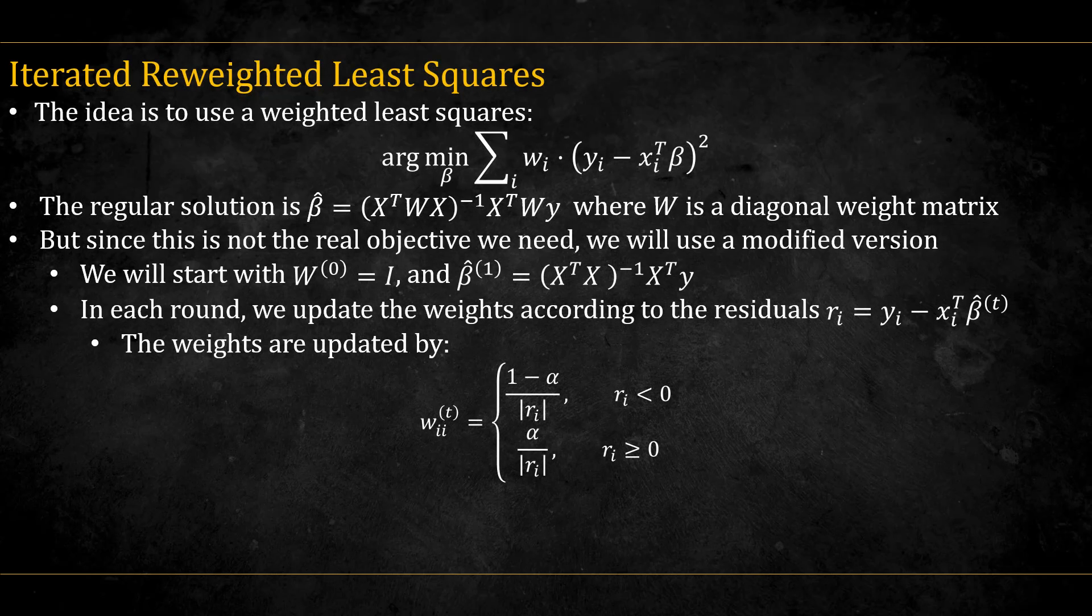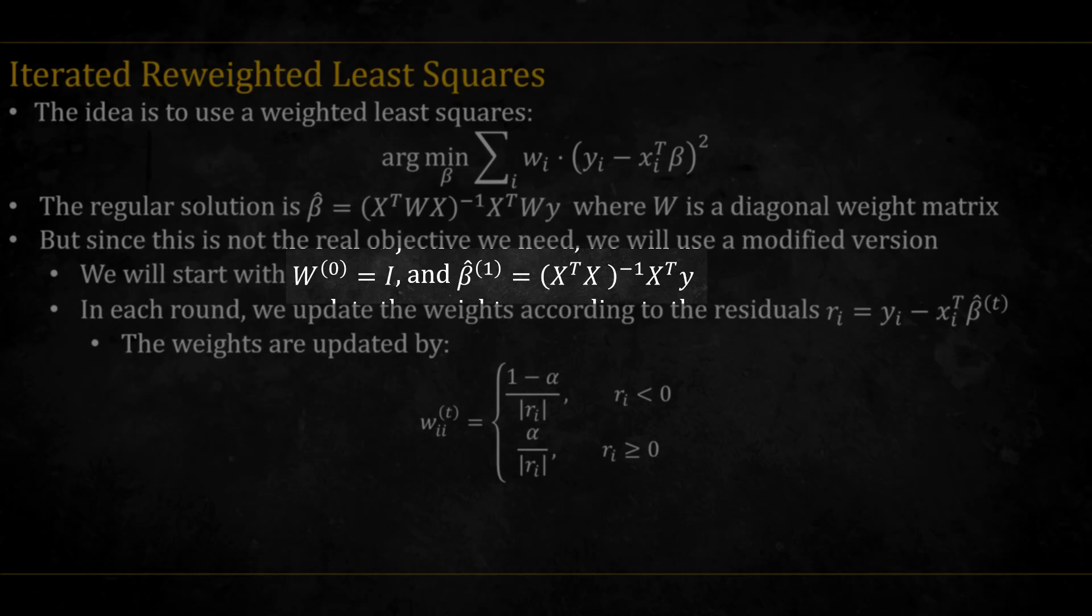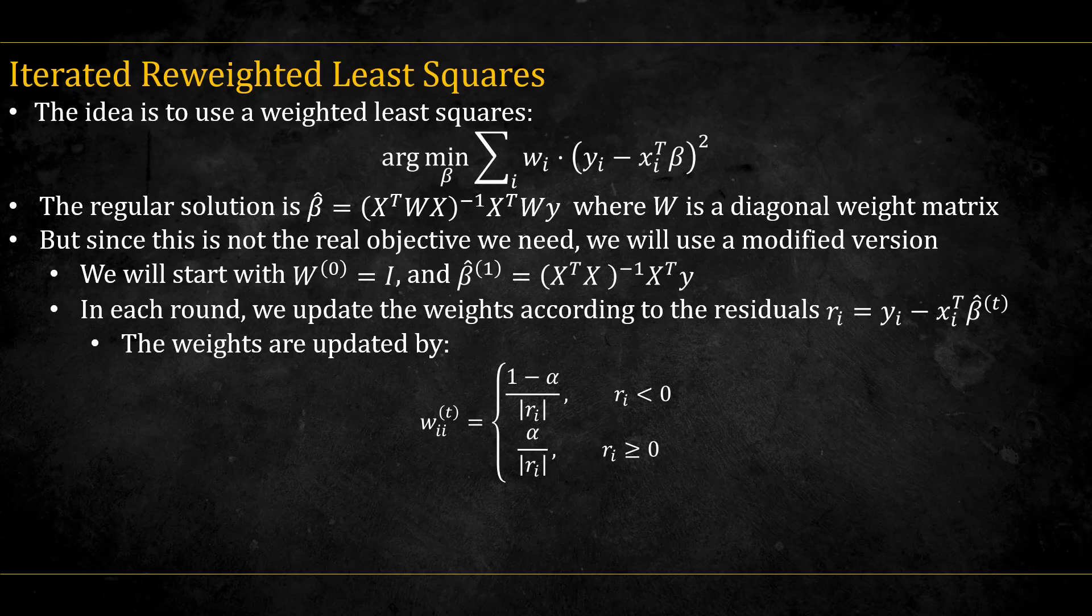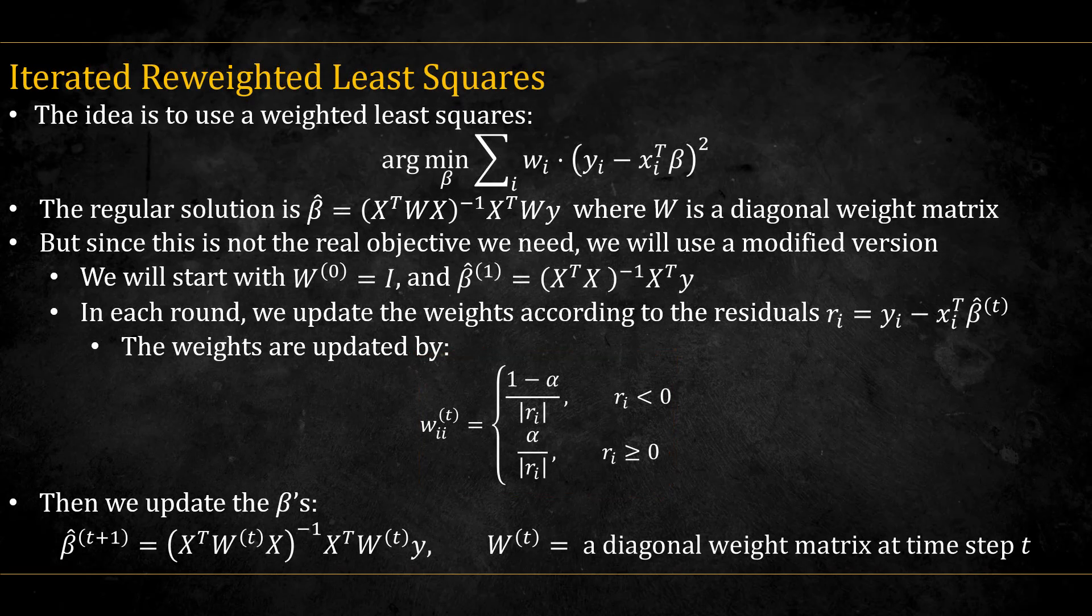But since the squared error is not our true objective, we need to modify this method. We will start with a regular OLS solution, and then we will update the weights in each round according to the residuals. The exact update is given by this. That is, each element in the diagonal matrix W will get the following. Then we'll update the betas with the updated weights. We'll continue doing this again and again, updating the beta, getting the residuals, and then updating the weight matrix. We usually continue until the betas converge.